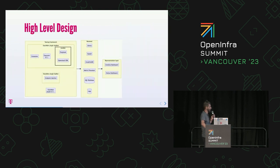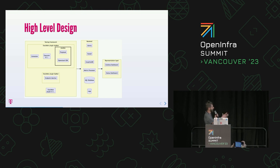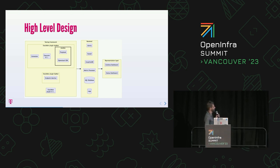High level design - really very high level, because once you start looking deeper the diagram becomes unreadable. On the left side is the testing framework. There is a testing framework which has a few ways to trigger tests. There is a backend which currently has Alerta, StatsD, Graphite, metric processor, databases, logs, and storage. On the representation layer we have a Grafana dashboard and a status dashboard.